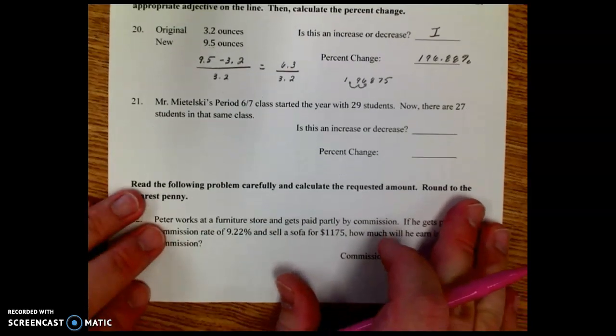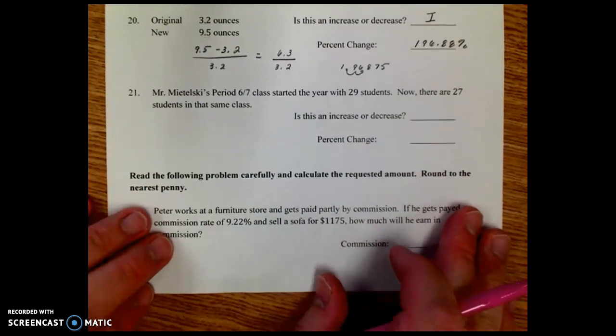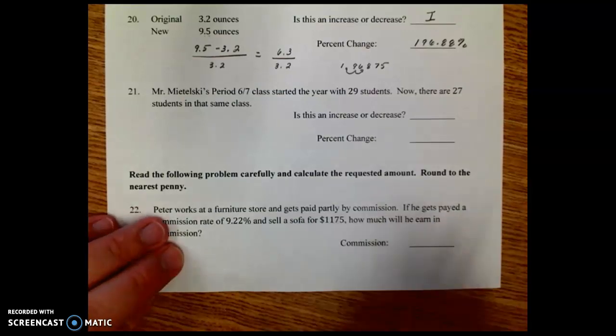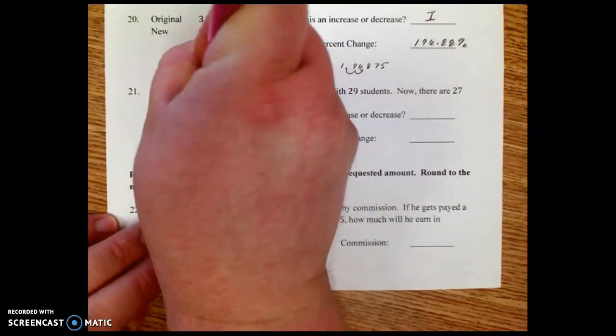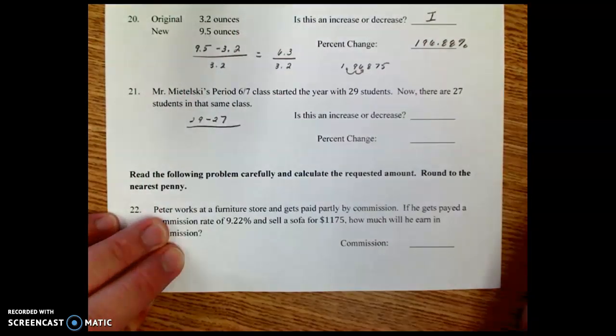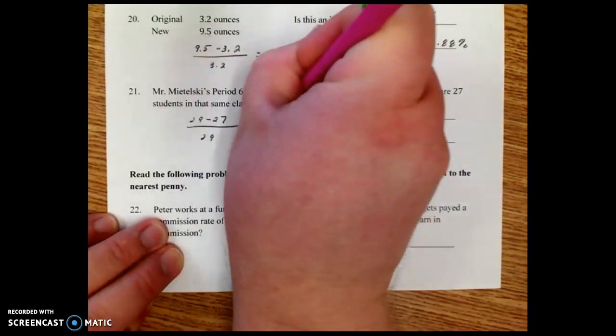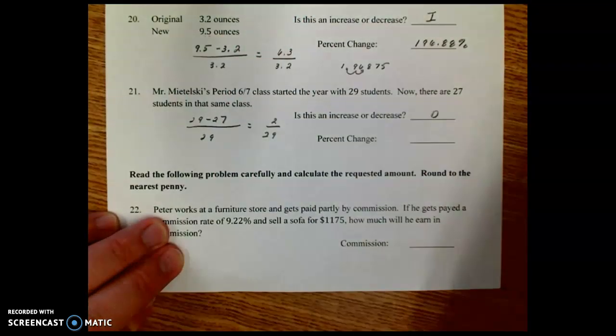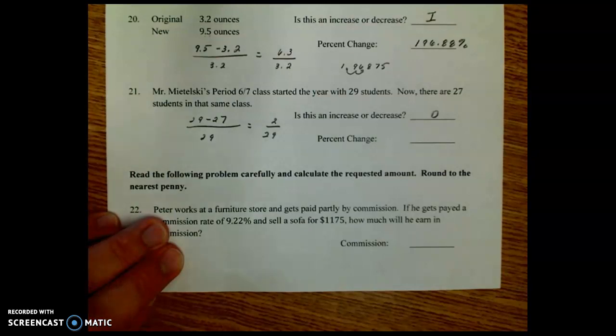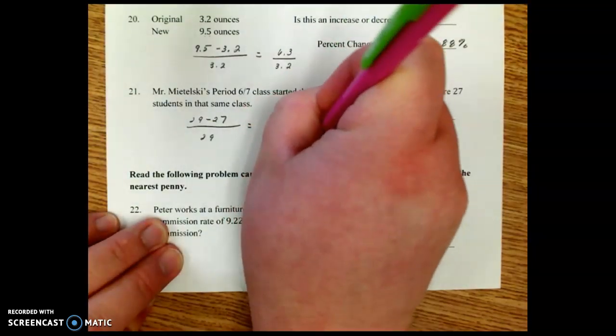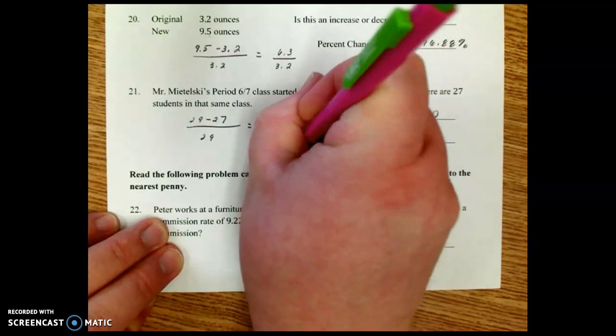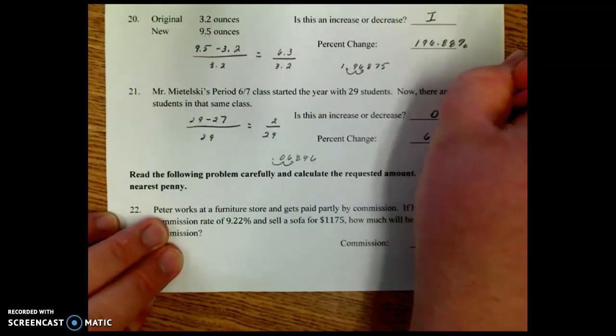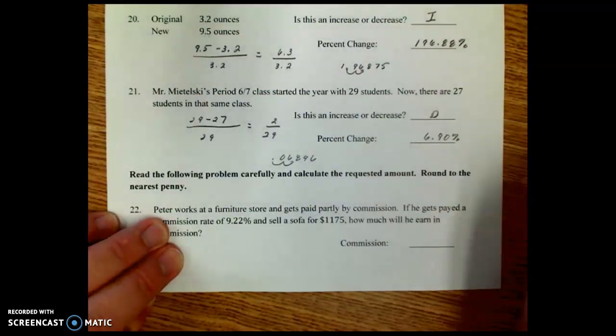Number 21, Mr. Matelski's period 6-7 class started the year with 29 students. Now there's 27 students. So we subtract 29 minus 27. Divide by 29. That's 2 over 29. This is a decrease. It goes down. And 2 divided by 29 is 0.06896. We scooted over two places. That'd be a 6.90% decrease.